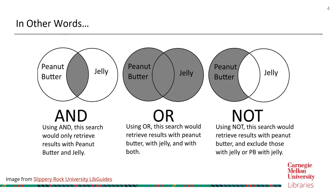The next slide shows a visual diagram of how these three boolean operators work. For AND, using 'peanut butter AND jelly,' only the overlapping area is grayed, so only results with both terms are retrieved. For OR, all areas including peanut butter, jelly, and both are grayed. For NOT, using 'peanut butter NOT jelly,' only peanut butter without the overlap is grayed, excluding results that contain jelly.